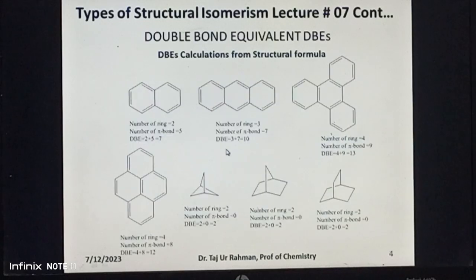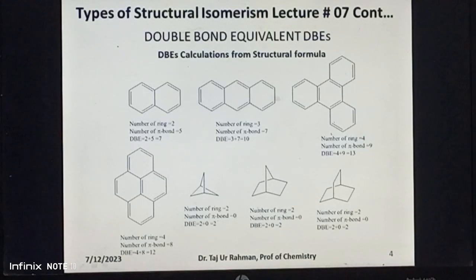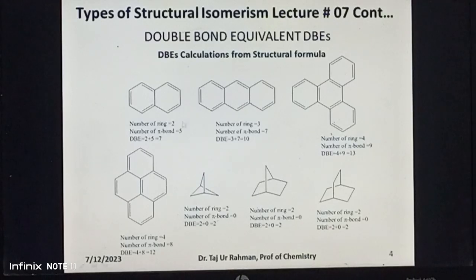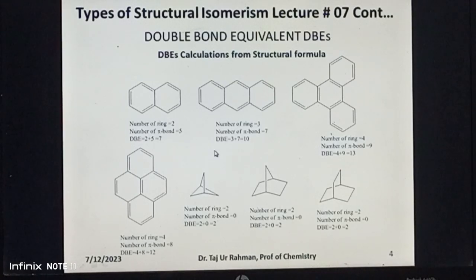Using the formula DBE = number of rings plus number of pi bonds, the DBE values have been calculated for fused bicyclic compounds and bridged bicyclic compounds. These DBE values are calculated by counting the number of rings and the number of pi bonds in these compounds and then putting these values in the formula.